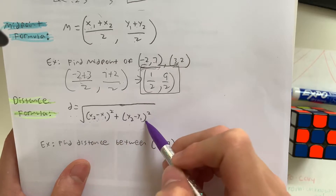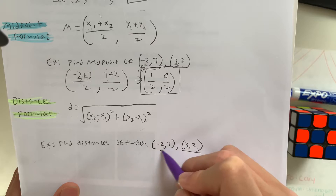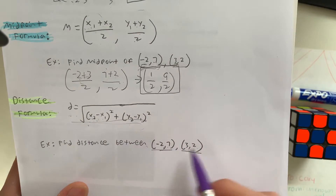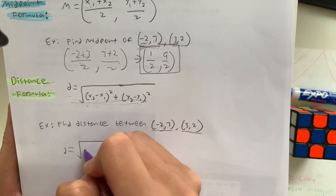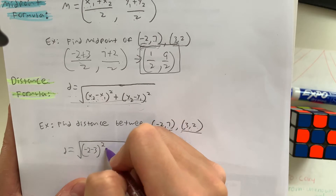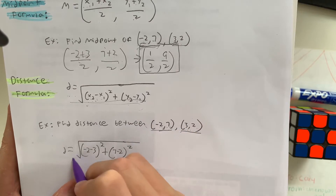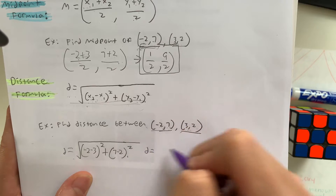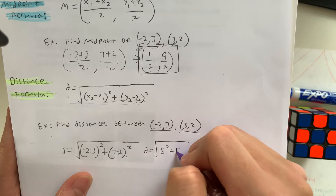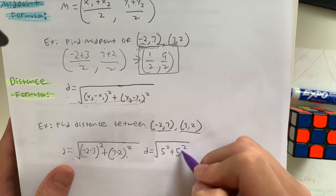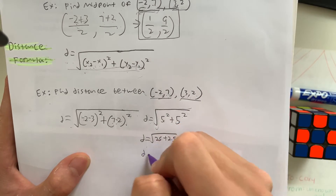So let me show you an example of how to find the distance between negative 2 and 7, and 3 and 2. We're going to use this formula to find the distance. Distance equals the square root of (negative 2 minus 3) squared plus (7 minus 2) squared. Simplifying: negative 2 minus 3 equals negative 5, so that's 5 squared, and 7 minus 2 is also 5, so that's 5 squared. The distance equals the square root of 25 plus 25, meaning our distance is equal to the square root of 50.